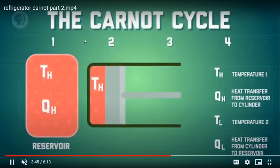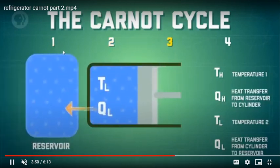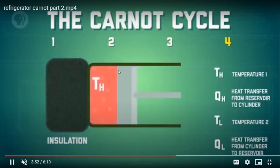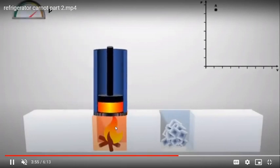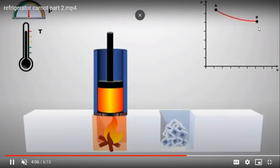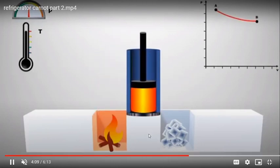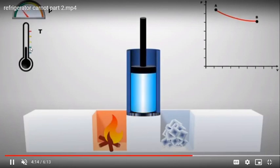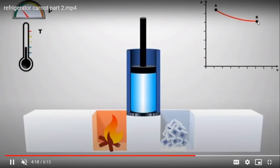This cycle has four processes: isothermal expansion, adiabatic expansion, isothermal compression, and adiabatic compression. We can represent these on a PV diagram showing pressure variation. During adiabatic stages, temperature and pressure change together; during isothermal stages, temperature is constant.